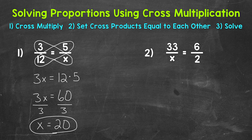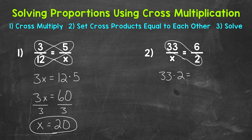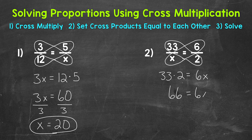Let's move on to number 2, where we have 33 to x equals 6 to 2. We'll start by cross multiplying, so multiplying diagonally. First we'll do 33 times 2, so we have 33 times 2. Bring our equal sign down, and then we have x times 6, which we can write as 6x. 33 times 2 gives us 66.